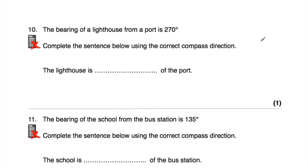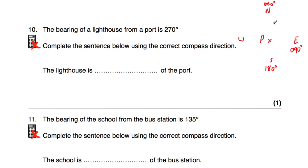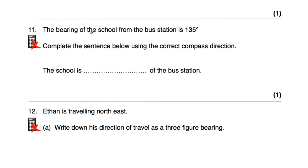Question number ten: the bearing of a lighthouse from a port is 270 degrees. North is 000, east is 090, south is 180, and west is 270 degrees — because rotating from north clockwise through 90 plus 90 plus 90 is 270 degrees. So if the bearing of the lighthouse from the port is 270 degrees, the lighthouse is west of the port.